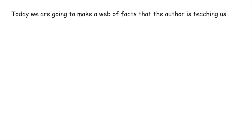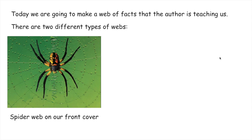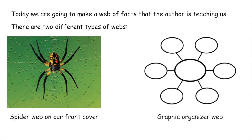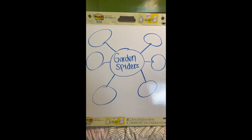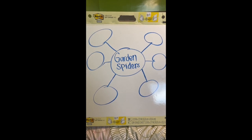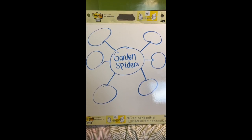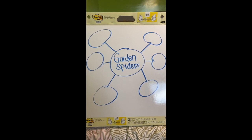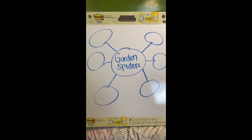Today, we are going to be making a web of facts that the author is teaching us. There are two different types of webs — there is a spider web on our front cover, or there is a graphic organizer web. I will be using the graphic organizer web as I read our story. This web will help us keep track of all the facts we learned about garden spiders. In the center of our web is our topic, which is garden spiders.